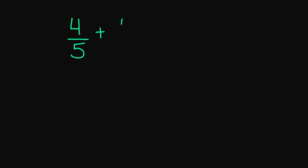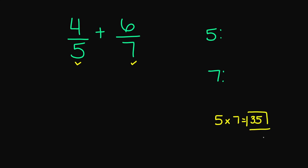So 4 over 5 plus 6 over 7. Notice here that my denominators are not the same, so I do need to find the common denominator. Now there is a shortcut you can use — you can just multiply your 5 times your 7, and that's going to give you 35. So 5 times 7 is 35, and 35 is going to be your common denominator.